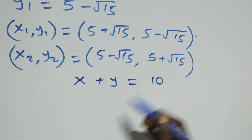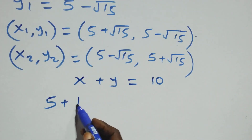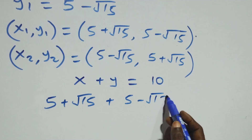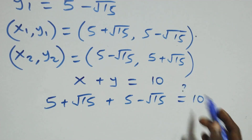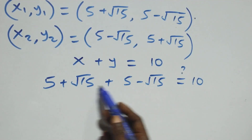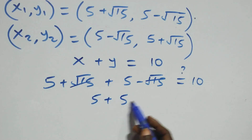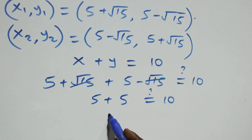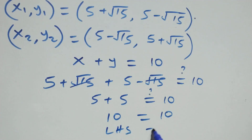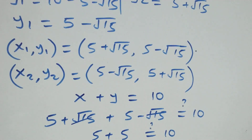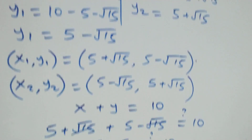We can verify using the first solution. For equation one, x plus y: (5 plus root 15) plus (5 minus root 15). Root 15 and minus root 15 cancel out, leaving 5 plus 5 equals 10. The left hand side equals the right hand side, so these two solution sets satisfy equation one.